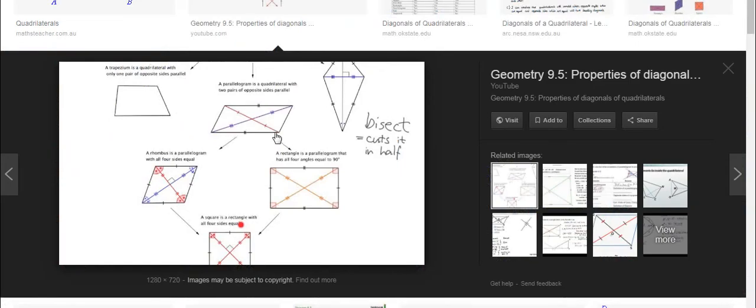Here we see so many quadrilaterals. Quadrilaterals means any figure which has four sides and it is closed. So, see the diagonals.